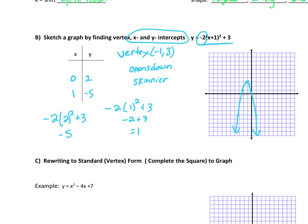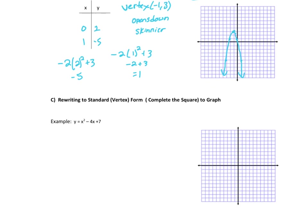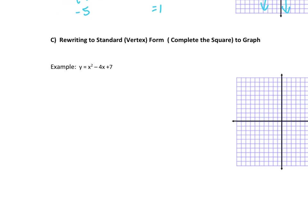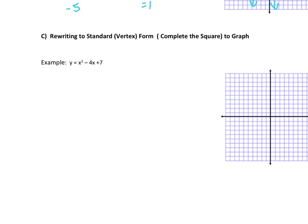All right, next we really want to look also at—we've got to review the process of completing the square. So to get an equation that's not in that vertex form, we want to complete the square. For me personally, I always like to move that 7 or whatever the constant is, I like to move it out of the way so I can focus my attention on just this x² - 4x.